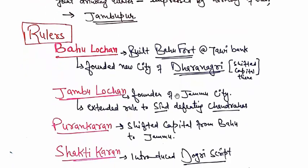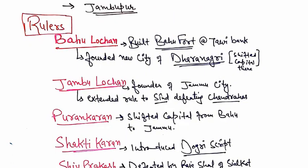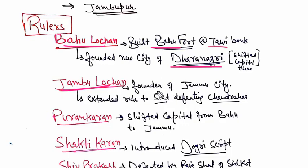We will talk about Jammu's important rulers. The first important ruler is Bahu Lochan, who built Bahu Fort on the bank of the Tawi River. He also founded the Dharanagri city and shifted his capital there. After that, his brother Jambu Lochan came to the throne, who is the founder of Jammu city as discussed earlier. He extended his rule to Sindh by defeating the king of Siyal, Chandrahas.